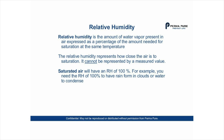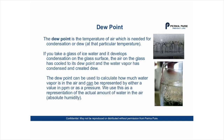The relative humidity represents how close the air is to saturation. It cannot be represented by a measured value. Saturated air will have a relative humidity of 100%. For example, you need the relative humidity at 100% to have rain form in clouds or water to condense.